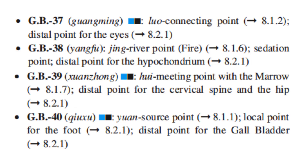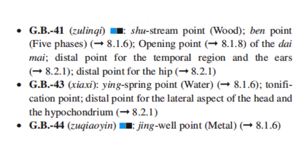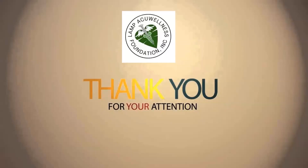GB31 is the adjacent point for the hip and GB33 is the adjacent point for the knee. GB34 is the He-sea Point, Earth point, Hui Meeting Point with the sinews, lower He-sea Point of the Gallbladder, Ma Dan Yang Heavenly Star Point, distal point for the liver, gallbladder, and hypochondrium, local point for the knee, and adjacent point for the foot. GB35 is the Xi Cleft Point of the Yang Wei Mai and local point for the knee. GB36 is the Xi Cleft Point. GB37 is the Luo Connecting Point and distal point for the eyes. GB38 is the Jing River Point, Fire point, sedation point, and distal point for the hypochondrium. GB39 is the Hui Meeting Point with the marrow, and distal point for the cervical spine and hip. GB40 is the Yuan Source Point, local point for the foot, and distal point for the gallbladder. GB41 is the Shu Stream Point, Wood point, horary point of the Five Phases, opening point of the Dai Mai, distal point for the temporal region, ears, and hip. GB43 is the Ying Spring Point, Water point, tonification point of the gallbladder, and distal point for the lateral aspect of the head and hypochondrium. GB44 is the Jing Well Point, Metal point of the gallbladder.